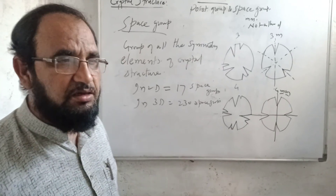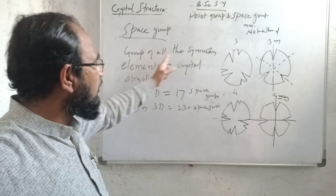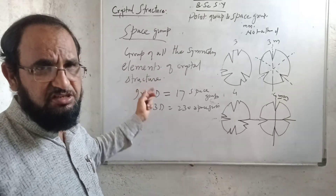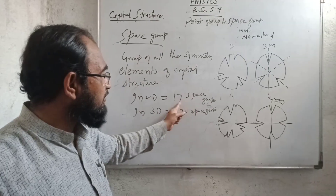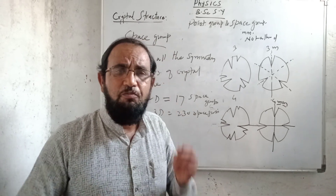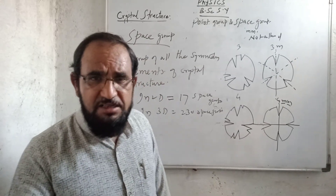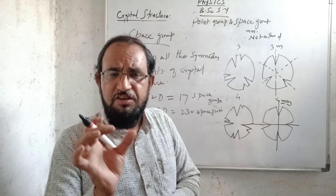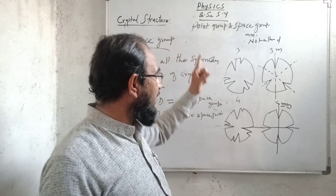In a similar manner, we can state about the space group. We can perform the same operations about the space group. The space group is the group of all the symmetry elements of a crystal structure. In 2D we can study as many as 17 space groups, and in 3D as many as 230 space groups. Using the space group and the point group, we can explain different types of lattice — the angles between them, the translation vectors, their lengths — and we can construct a lattice.